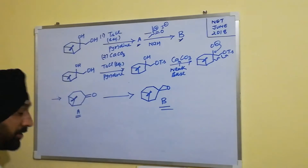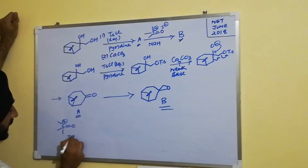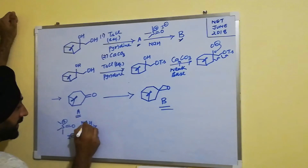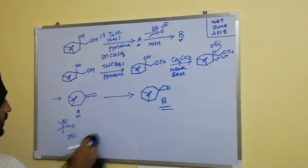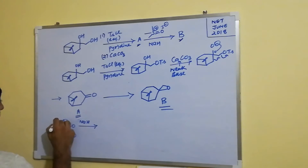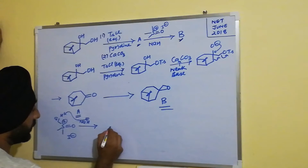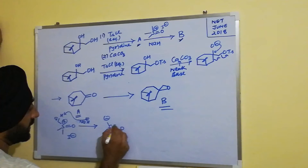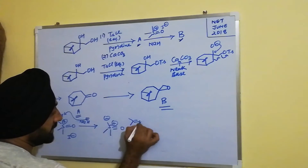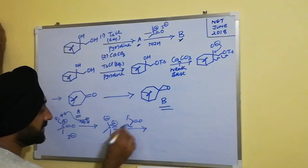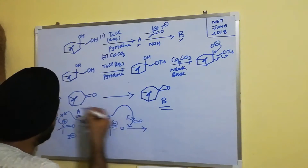Let's look at the mechanism. We have trimethylsulfonium iodide treated with a strong base like sodium hydride. The base abstracts the proton from the methyl group adjacent to the sulfur, leading to the formation of a carbanion. This carbanion then attacks the electrophilic carbonyl carbon of compound A.